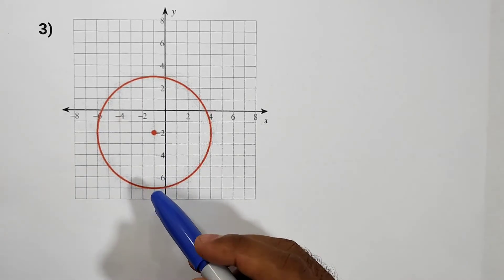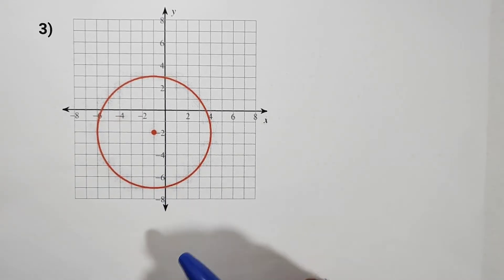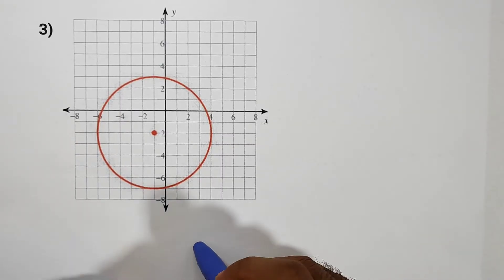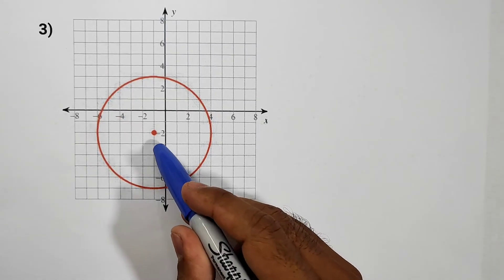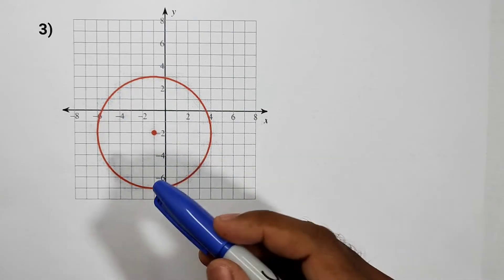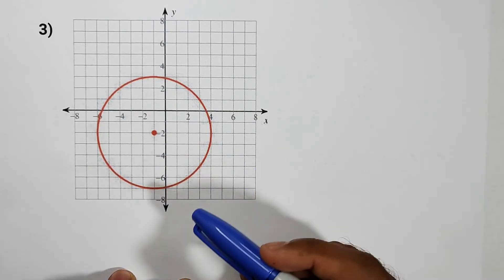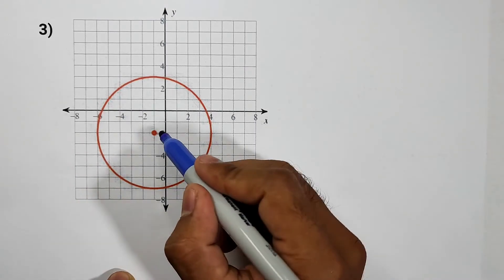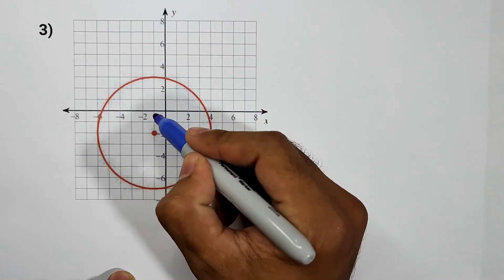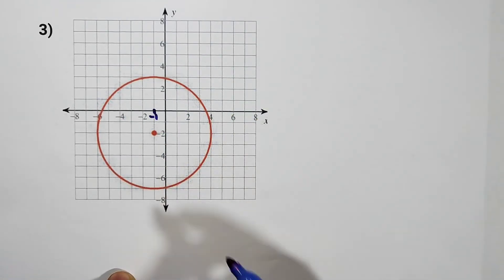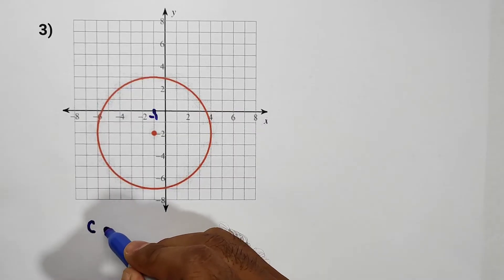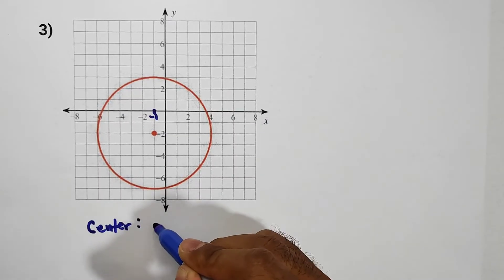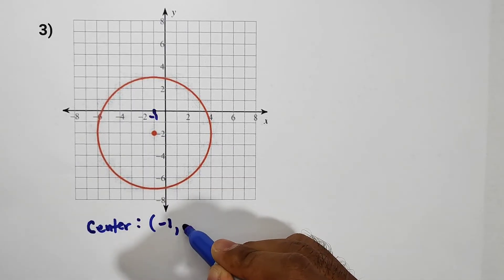Now let us have item number 3. What if the given is the graph of the circle? First, to identify the equation of this circle using the center-radius form, let us find the coordinates of the center. The x-axis coordinate is negative 1 and the y-axis coordinate is negative 2. Therefore, our center is equal to (negative 1, negative 2), which is in the third quadrant.